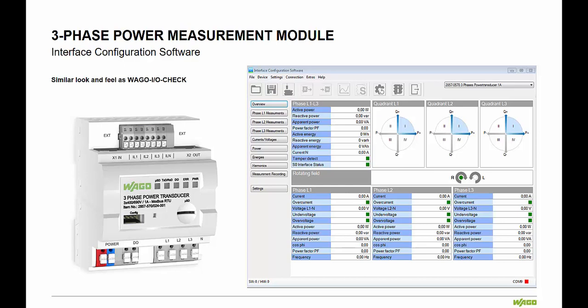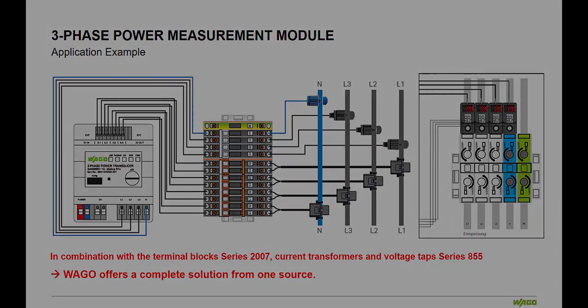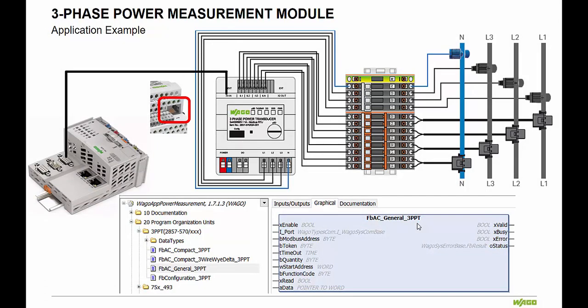All of this and more in a familiar setting, since it is based on the Wago I.O. Check utility. When combining the three-phase power measurement module with other products from Wago, such as the series 2007 terminal blocks, various current transformer solutions and the series 855 voltage taps, Wago offers a complete power measurement solution from one source. Both Code Assist 2.3 and E-Cockpit offer library files to support the easy setup of the Modbus RTU communications to extract the data from the module.